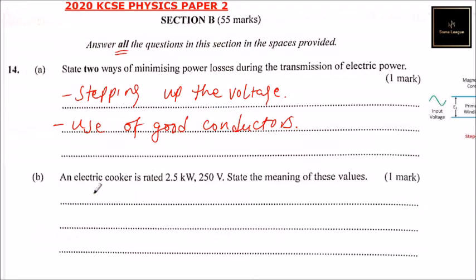Part b of the question: we are told an electric cooker is rated 2.5 kilowatts and 250 volts. State the meaning of these values. 2.5 kilowatts means 2500 watts — that is the power output of that electric cooker.